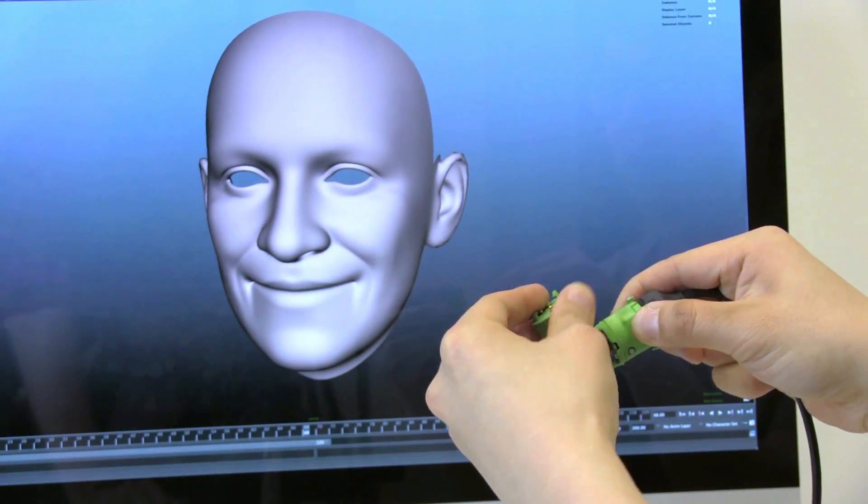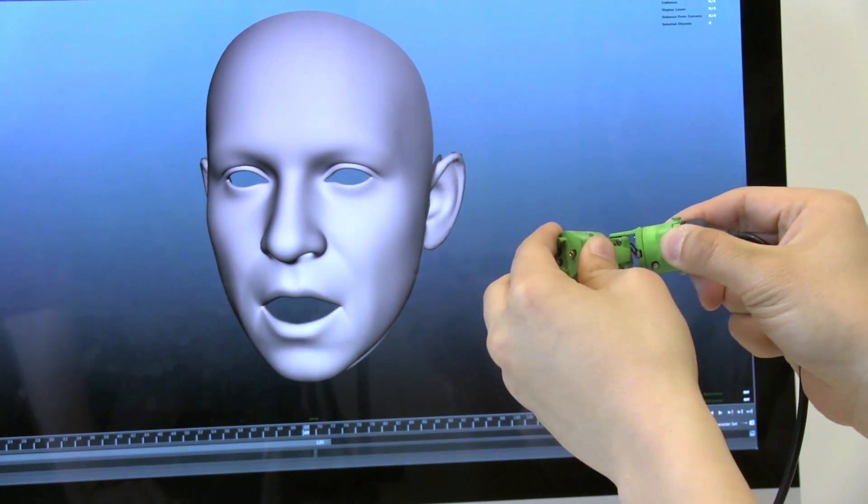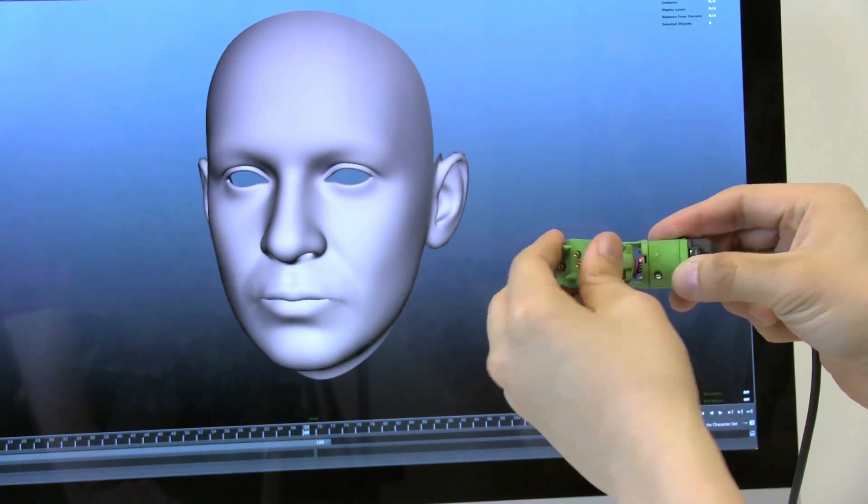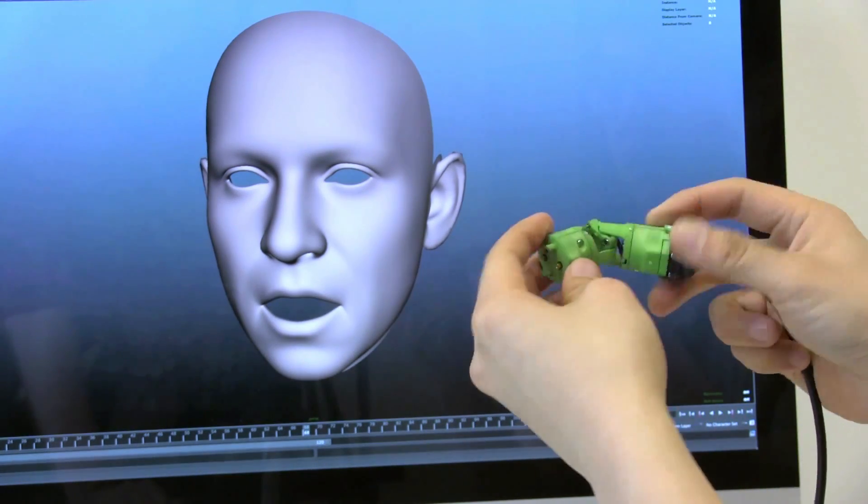The degrees of freedom can also be mapped to non-rotational degrees of freedom. In this simple example, we manually map a joint to a face model rigged with blend shapes. One joint is sufficient to intuitively control the mouth of this character.